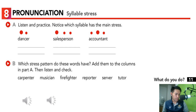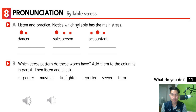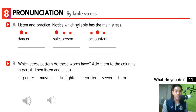Let's listen first. Page 11, Exercise 8, Pronunciation, Syllable Stress, Part A. Listen and practice. Notice which syllable has the main stress. [Audio:] Dancer. Dancer. Dancer. Salesperson. Accountant. So it's dancer, salesperson, accountant. You may notice the syllable stress: in 'dancer' it's on 'dan,' in 'salesperson' it's on 'sales,' and in 'accountant' it's on 'count' — there will be a rising intonation or syllable stress in that part.